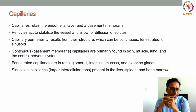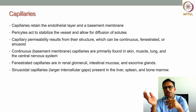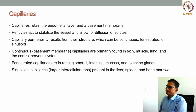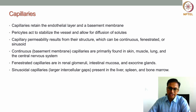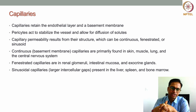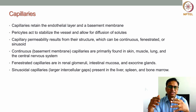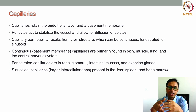Depending on the structure of the basement membrane and intercellular spaces, capillaries can be of different types: continuous, fenestrated, or sinusoidal. Continuous capillaries, where the basement membrane is mostly continuous, are present in skin, muscle, lung, and the central nervous system. When the basement membrane is intact, it modulates the diffusion of solutes to the surrounding tissue.